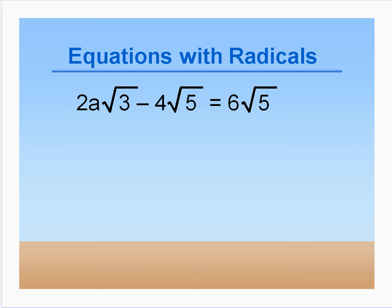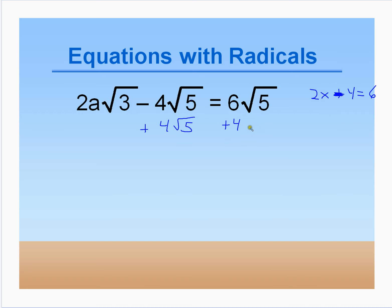This next equation is set up in a form like 2x + 4 = 6 — we have a number, 2√3, times a variable, minus 4√5 equals a number. We cannot simplify any of these radicals, so we go ahead and add 4√5 to both sides. That gives us 2a√3 = 6√5 + 4√5 = 10√5.